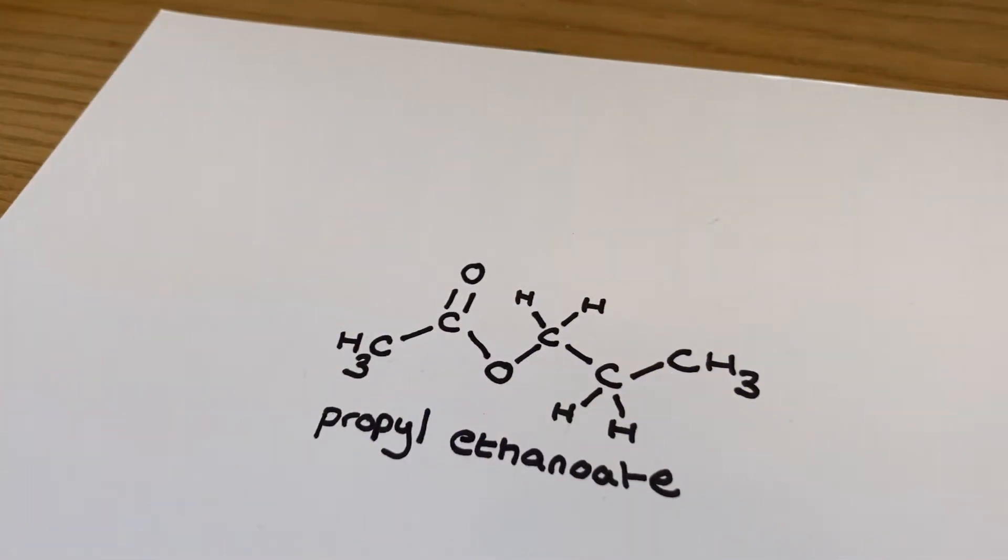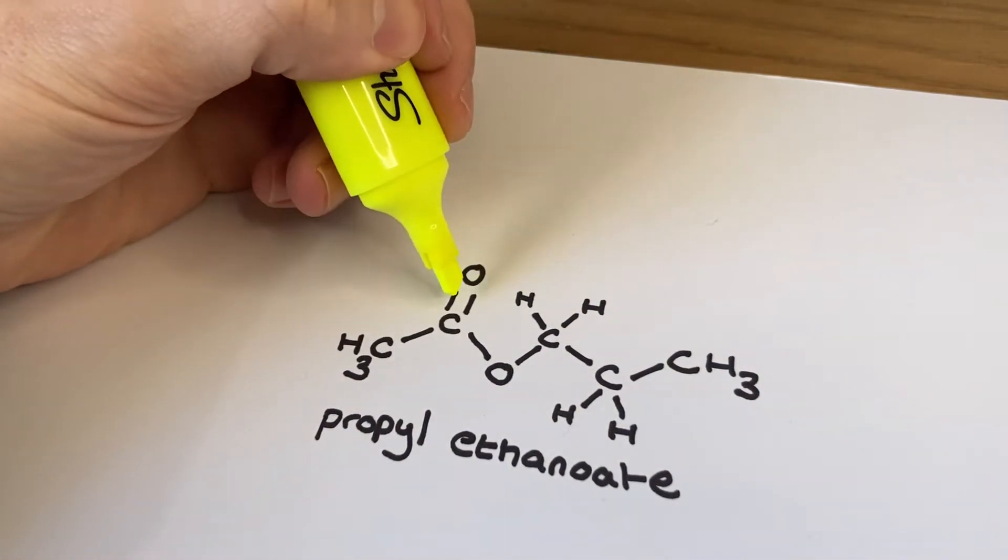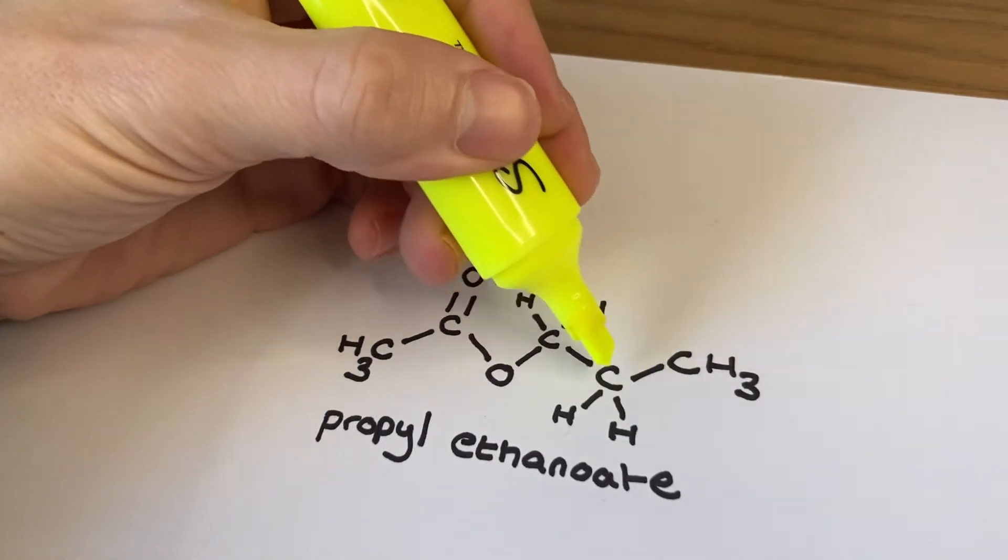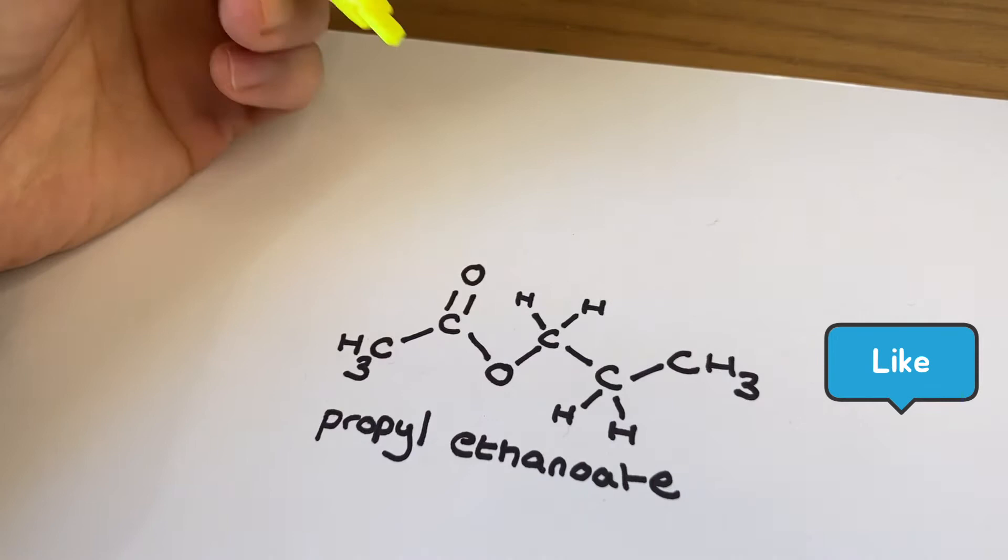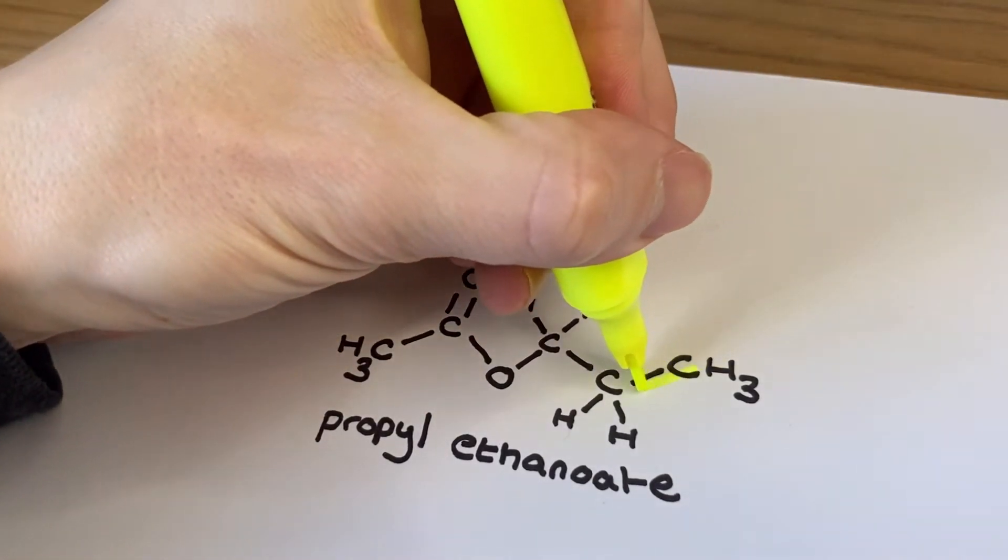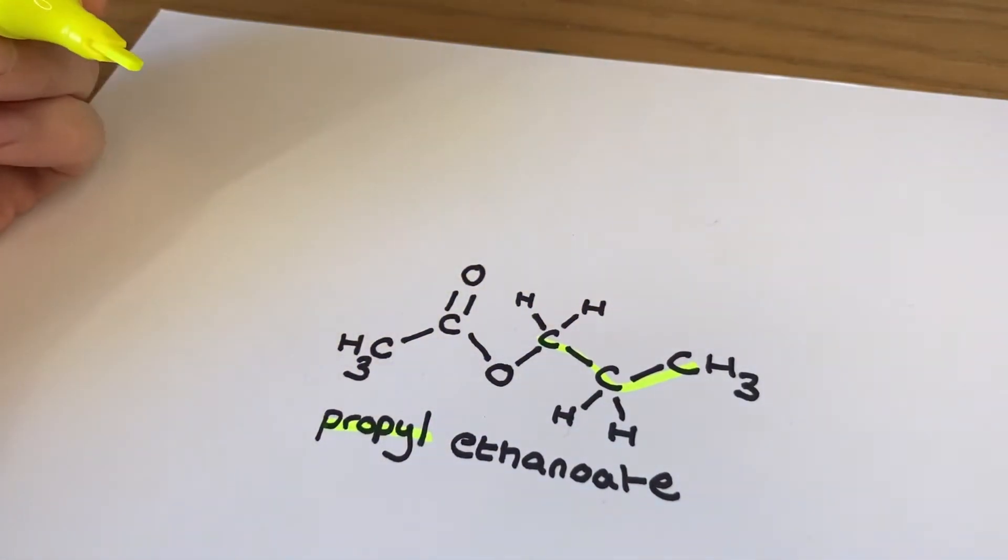So the ester I'm going to make in all of these different methods is propyl ethanoate, and I'm going to show you what reagents are used to make it in three different reactions using this sort of spider diagram flowchart. I won't be using balanced reaction equations to summarize this, but I do actually recommend you try writing these out for yourselves using the information I'm going to give you.